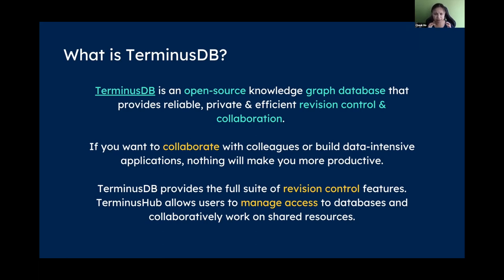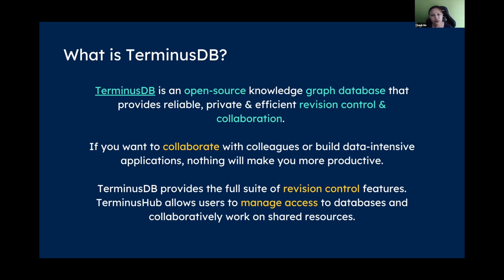It's a knowledge graph database. Today we're focusing on how it differs from a SQL-based or relational database. Because of its graph-based design, TerminusDB can do revision control. For those who have used Git, you know that Git operations produce very graph-like illustrations. With that graph-based design, TerminusDB can do things like Git — branching, merging, rollback. Collaboration becomes very easy.